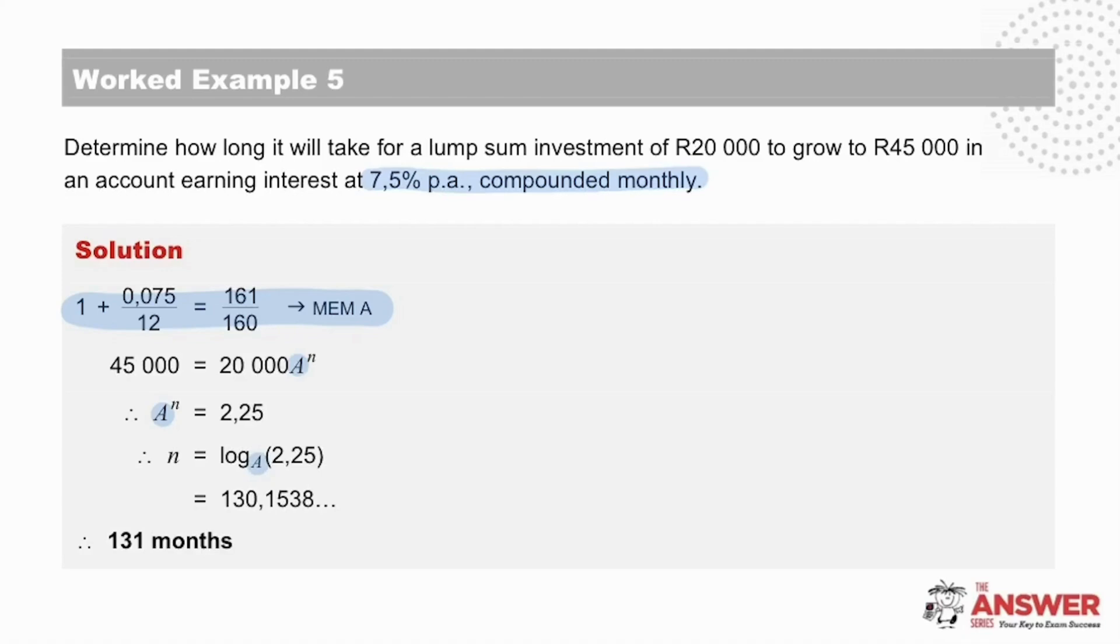For those who would like to see this from the very beginning or in full, here is the compound increase formula and here is the substitution. If you would prefer to write it out in full instead of using A, we still recommend you use the calculator memory to simplify the calculation. In the next step, 45,000 divided by 20,000 gives us the 2.25 and so to solve for n we use logs. n equals log base A, which is the compounding factor, of 2.25 and we get an answer of 130.1538, etc.